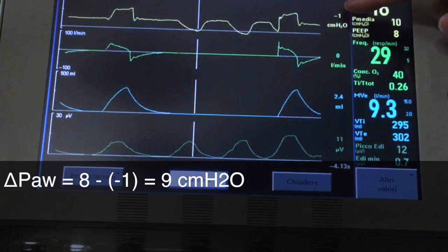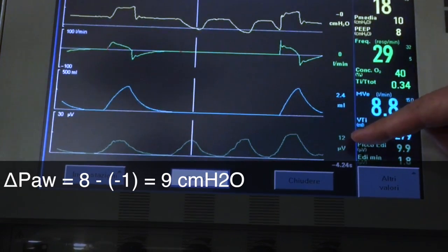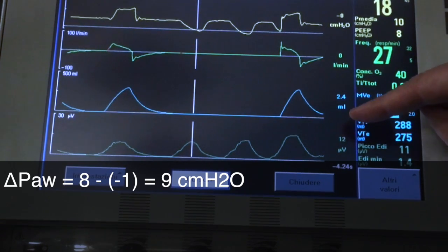In the same effort, we then see how much electrical activity the diaphragm spends to generate the pressure, and it is, in our case, 12 microvolts.